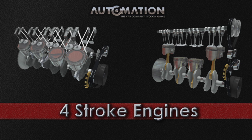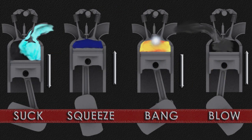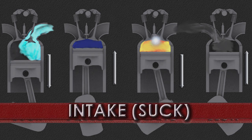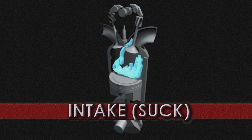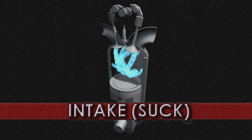The most common kind of car engine is the four-stroke engine, named after the four strokes the piston must travel to complete one cycle of combustion. These four strokes are affectionately known as suck, squeeze, bang and blow. The first stroke moves the piston down while a fuel-air mixture is sucked into the combustion chamber.